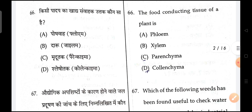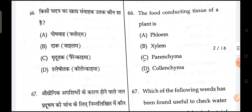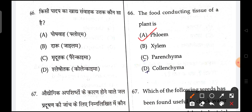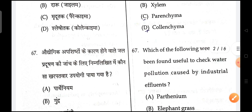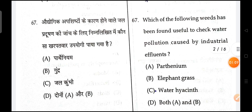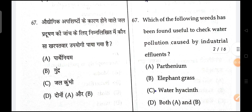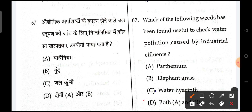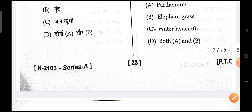Next is, the food conducting tissue of a plant is? Phloem is the correct answer. Next is, which weed has been found to check the water pollution caused by industrial effluents? Both A and B is the correct answer.